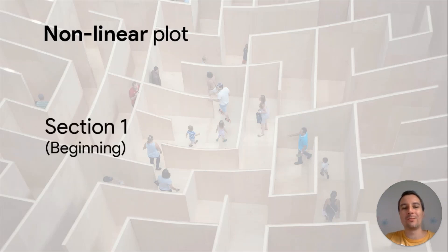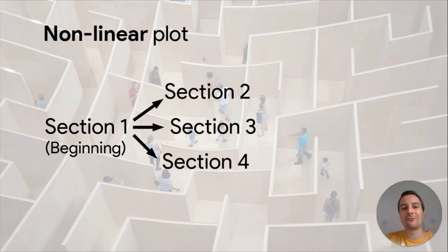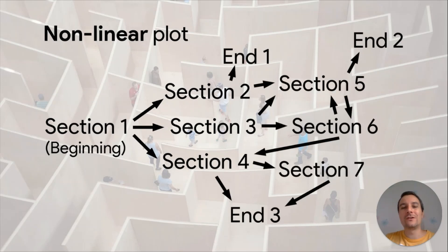It starts off with section 1, the beginning, and I give my reader three choices. Depending on the reader's interest, the reader ends up in section 2, section 3, or section 4. It depends on how adventurous your students are and how many options you want to give your readers. You can see I have three different endings, and each of my sections has at least two options, so it's up to the reader how to proceed through the story.